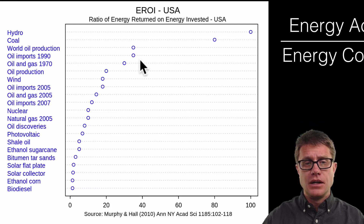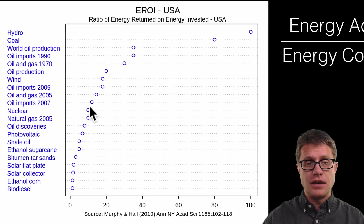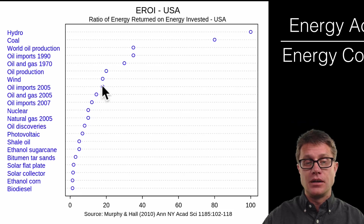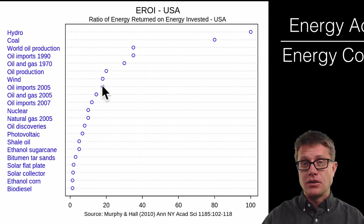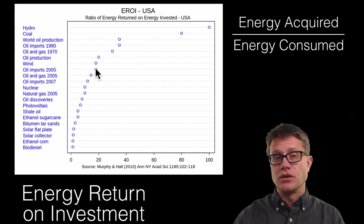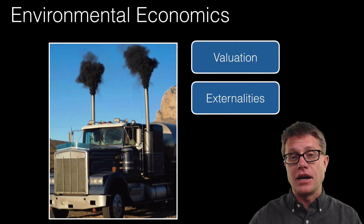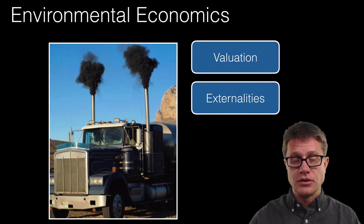These ratios are going to change over time. Oil imports in the 1990s had a ratio of 40-to-1, but by 2007 that had dropped way down to closer to 12-to-1. Now things like wind have a higher ratio, so there is going to be a movement away from fossil fuels towards renewable resources because they are going to become cheaper as the technology improves.